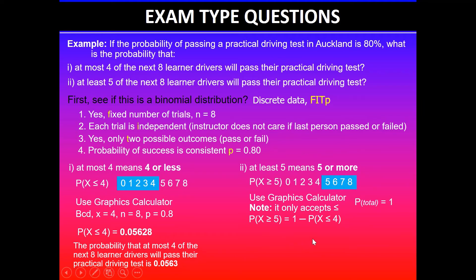We've already done less than or equal to four in our previous problem. So we know that using BCD, when X is equal to four, the calculator will read that as less than or equal to four, n value of eight and 0.8 is the probability.